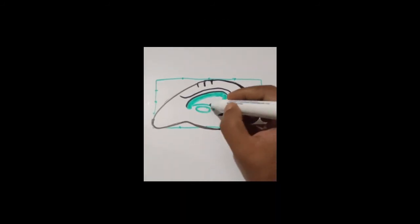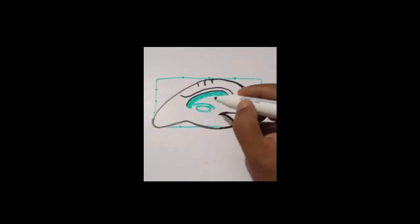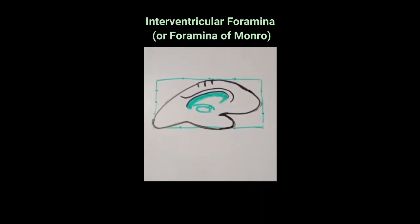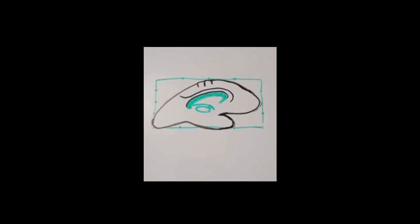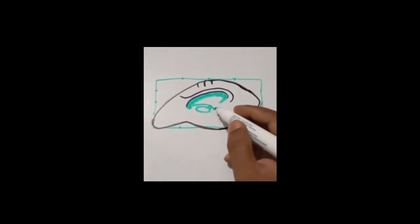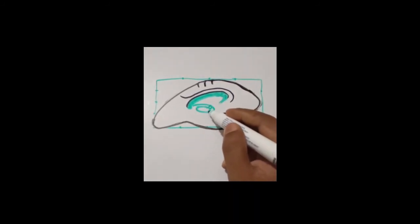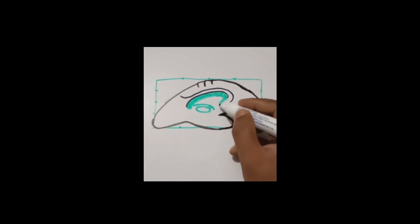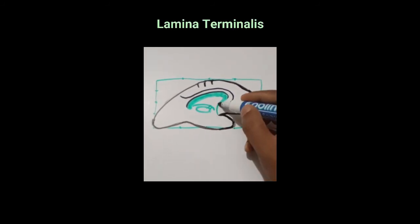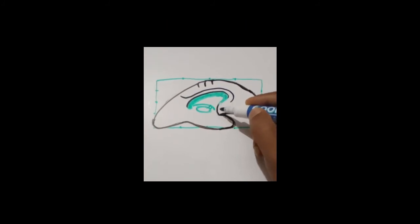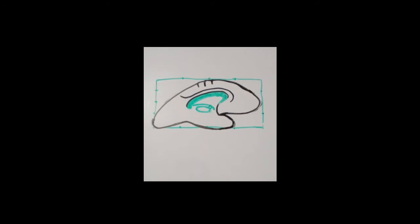Just below the fornix there will be the thalamus. In between the anterior column of the fornix and the thalamus there will be a foramen termed as the interventricular foramen — you will hear this name again when studying CSF. In between the two thalami there will be the third ventricle, and in front of the third ventricle there will be the lamina terminalis, which is a collection of gray matter extending from the rostrum of the corpus callosum up to the optic chiasma.